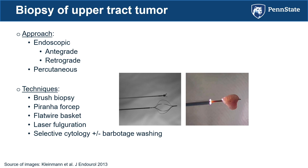For ureteroscopic biopsy, tools include brush biopsy, piranha forceps, or a flat wire basket. The piranha forceps is small and fits through the ureteroscope, but unless the patient has a nice stalk to grasp, biopsy yield may be unsatisfactory. The flat wire basket — a steel wire cutting basket — is my preferred approach for large papillary tumors, as it yields good tissue volume and allows the pathologist to perform mismatch repair deficiency staining. There's also laser fulguration using holmium laser. We typically use a combination of these techniques.